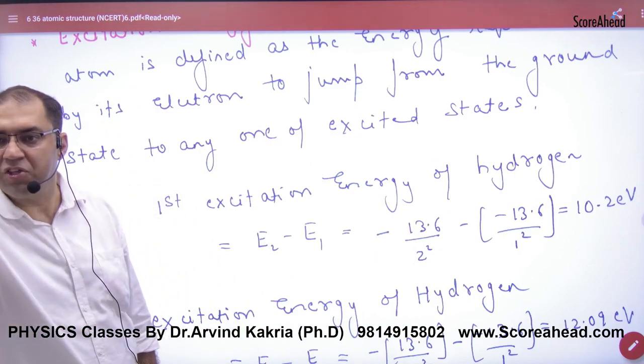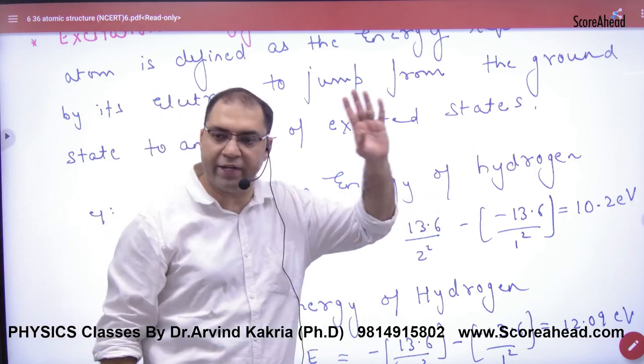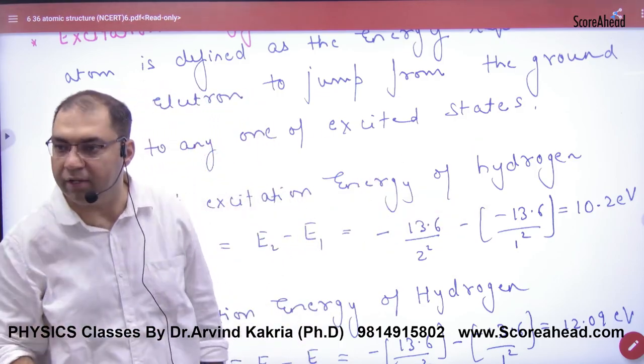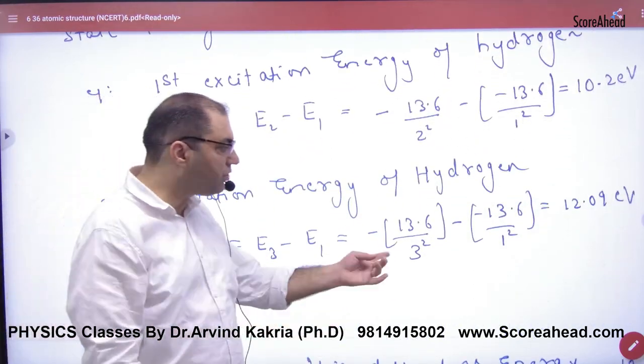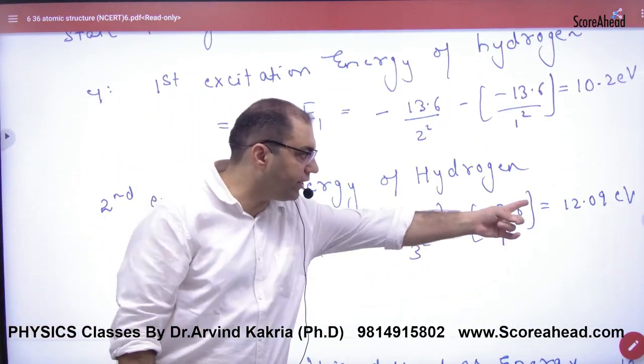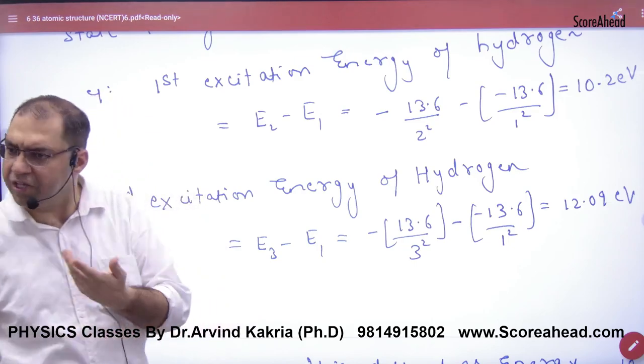Sometimes in objective questions, there's a direct shortcut written: first excitation energy difference is 10.2 electron volts. People wonder where 10.2 came from - it comes from this subtraction. Second excitation state means transition between n=3 and n=1, which gives 12.09 electron volts.